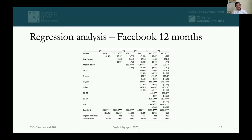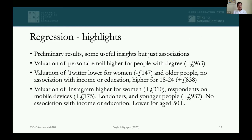With respondent-level data, we can look at individual characteristics related to valuations. For willingness to give up Facebook for one year, OLS regression shows the female dummy is associated with valuations considerably higher by around £490 per year. Those taking the survey on a mobile device also show higher values, while those with a university degree show lower values for Facebook. Regarding Twitter, valuations appear considerably lower for women and higher for those aged 18–24.